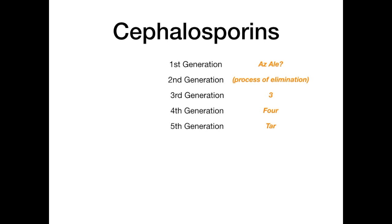Here is the mnemonic. First generation: AS-AL. Second generation, we're basically going to skip and use as process of elimination. Third generation, the mnemonic is 'three.' Fourth generation, the mnemonic is 'four.' And for the fifth generation, the mnemonic is 'TAR.' This will all make sense shortly, so bear with me.